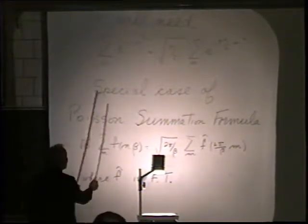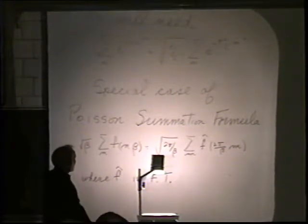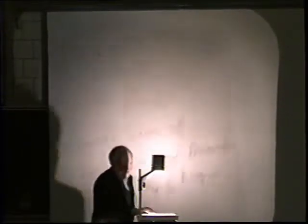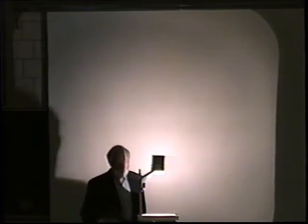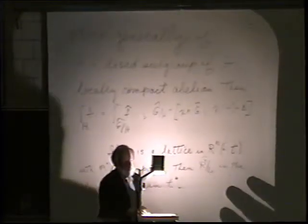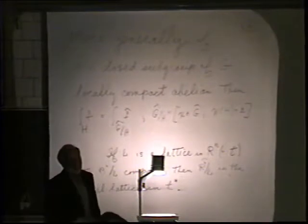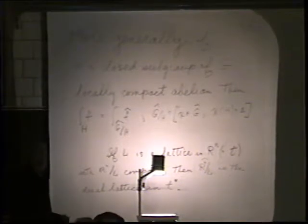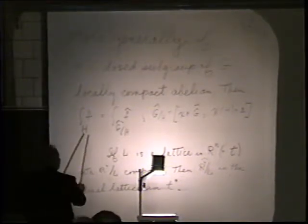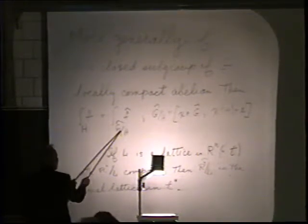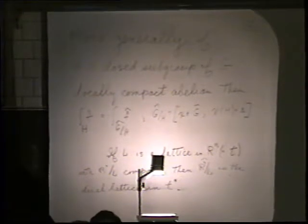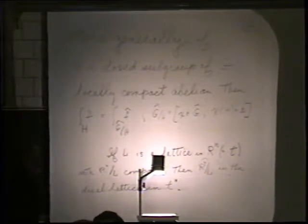For any function, we use e to the minus x squared or e to the minus C x squared, where F-hat is the Fourier transform of the original function. It's also worth noting that this works for any closed subgroup of a locally compact abelian group. Then the integral of a function over the subgroup is the same as a Fourier transform over the character group G mod H, with the Haar measures normalized properly.